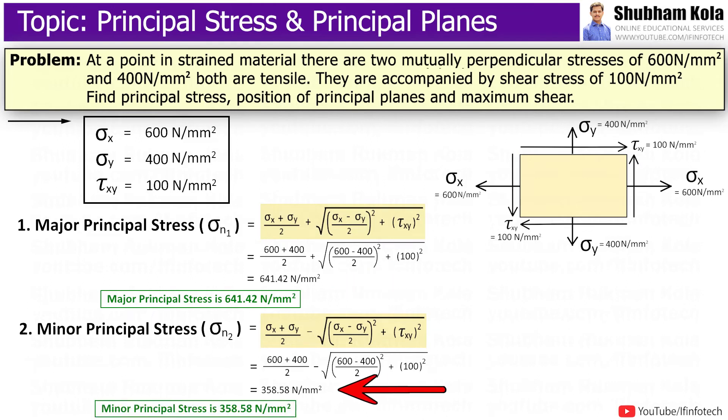And minor principal stress, that is sigma_n2, that will be 358.58 N per mm², which is tensile.